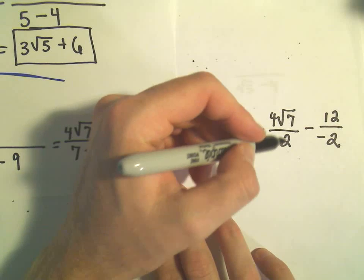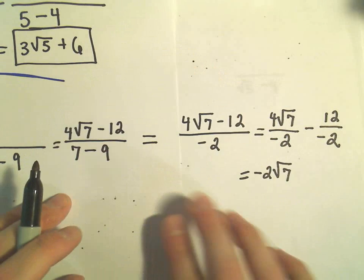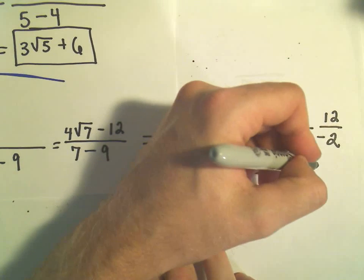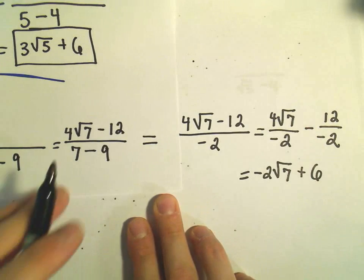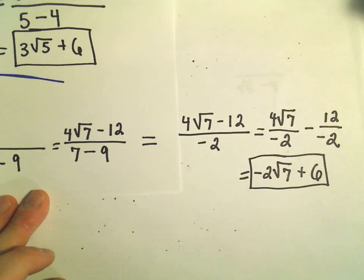So 4 divided by negative 2 is negative 2, square root of 7. I've got a negative and a negative, that's going to make a positive. 12 divided by 2 will give us 6. And again, we have now rationalized the denominator. Yes, there are still radicals present, but as long as they're not in the denominator, that's all we're worried about.